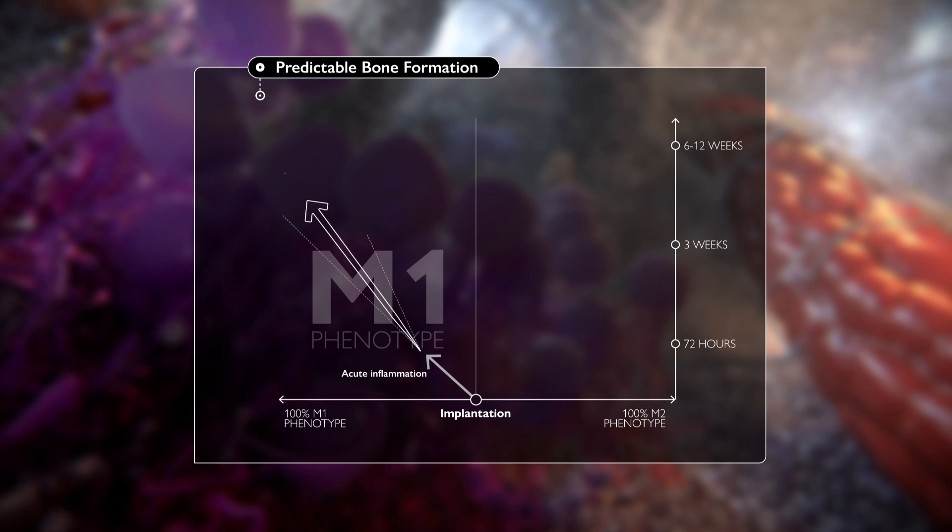inflammation and proliferation of M1 at the expense of the M2 phenotype will result in fibrous tissue formation, ultimately causing the fusion to fail.